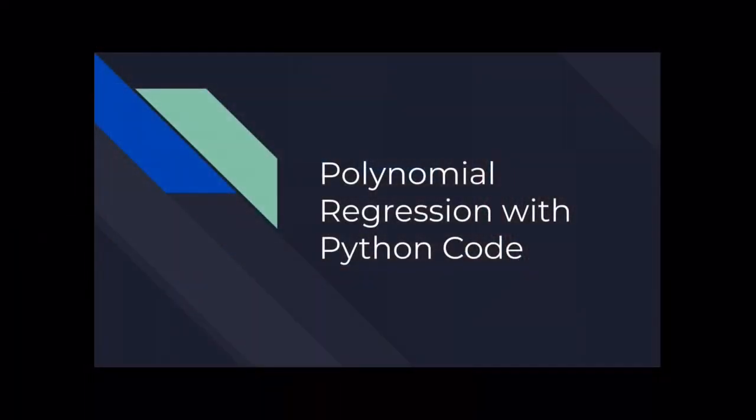Hello friends, welcome back to our channel Mirror Neuron, which means watch and learn. Today we are going to discuss polynomial regression. Polynomial regression means that the relationship between my output variable and the input variable is no longer a linear straight line — rather it's a polynomial, meaning it will have a nonlinear relationship.